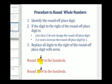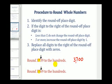For the first example, the three tells us to round down, so we leave the seven as is and replace the three and the nine with zeros. This gives us 3,700 rounded to the nearest hundreds. For the second example, the six tells us to round up, so we increase the seven by one and get 3,800.